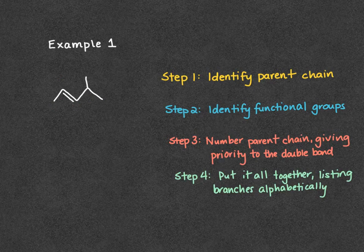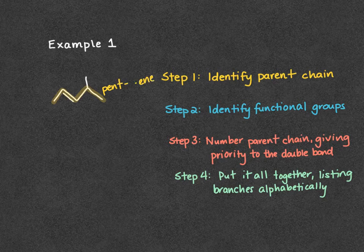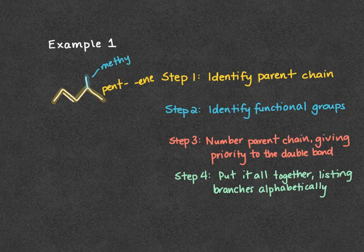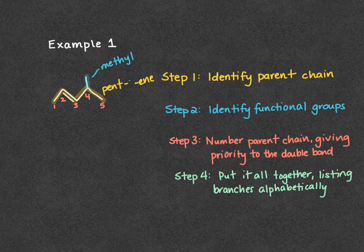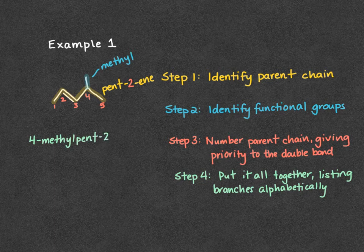Our final step is to put it all together, listing our branches alphabetically. Our parent chain highlighted in yellow is pentene, with a number locating the double bond. Our branch, shown in blue, is a methyl group. We numbered from left to right, so our methyl is on carbon 4 and our double bond is on carbon 2. Putting it all together: 4-methyl-pent-2-ene.